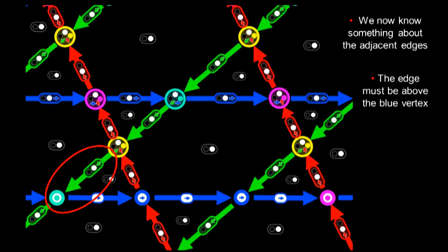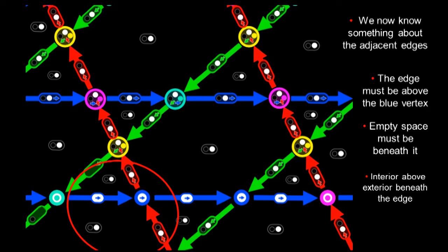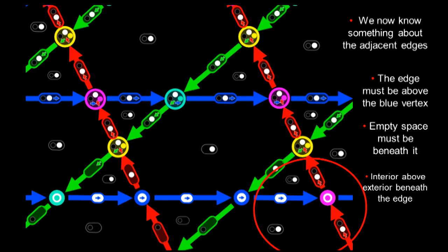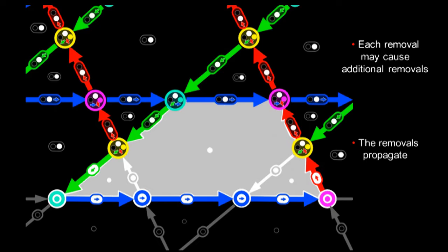Above this vertex, we know there's going to be a green edge. Below it, there's going to be empty space. Above the edge, we're going to have the inside of the triangle. Below it, we'll have empty space.